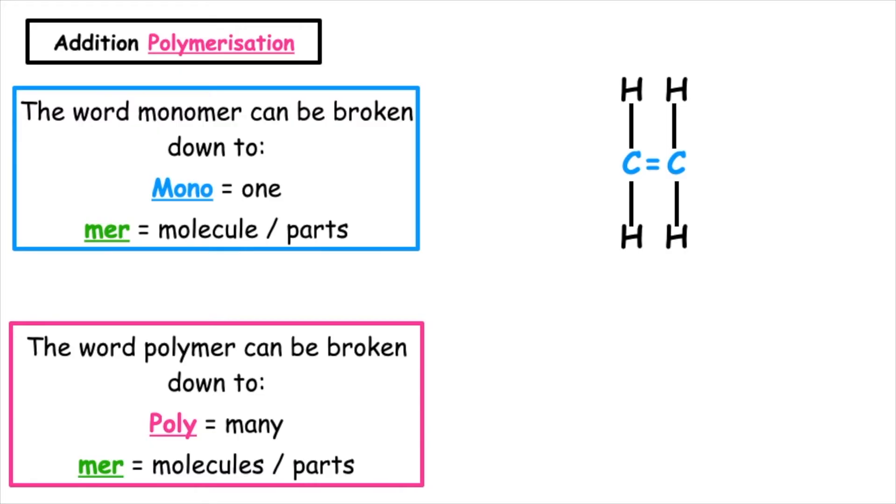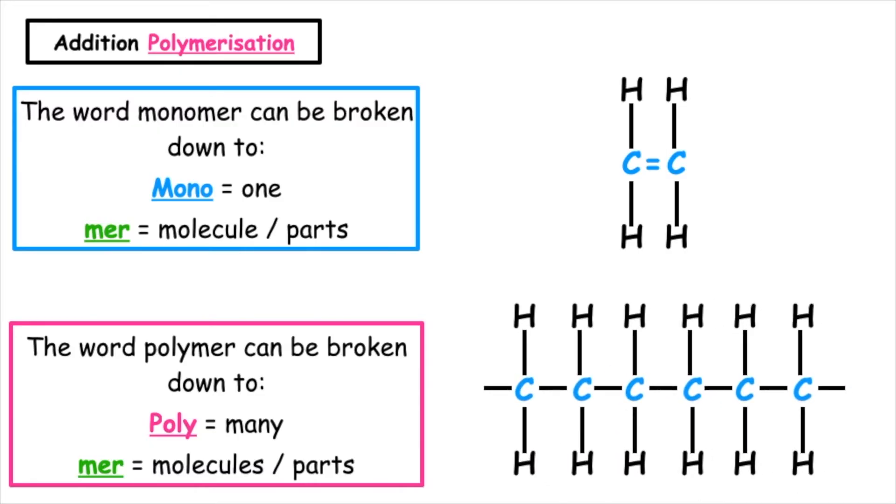The polymer will have carbon-to-carbon single bonds, and we will have to put a square bracket around this as we're just showing a small section of the polymer chain.